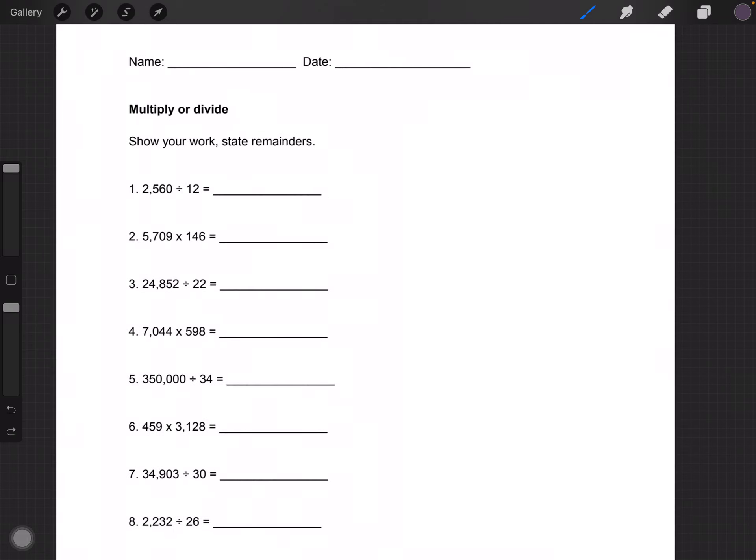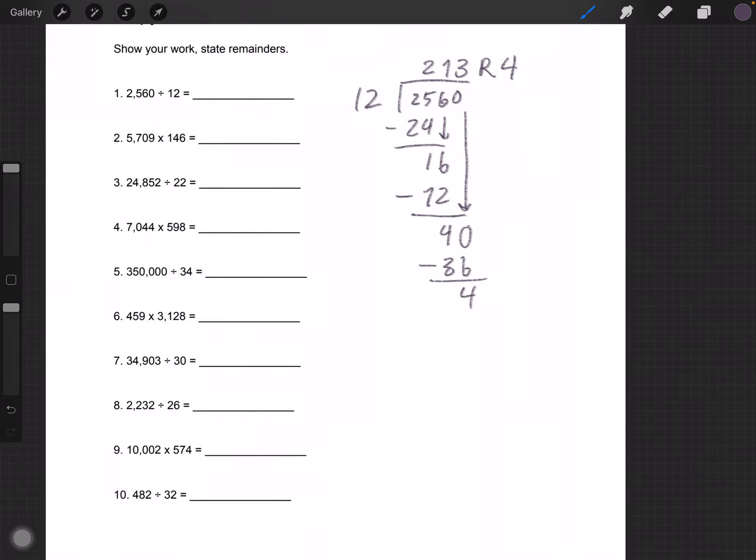First one says 2,560 divided by 12. 12 goes into 25, 2 times equals 24, minus 1, move the 6 down, 16. 12 goes into 16, 1 time, and that's 12. Bring the 0 down, 12 goes into 40, 3 times, and remainder 4. Make sure to put your remainders as well.